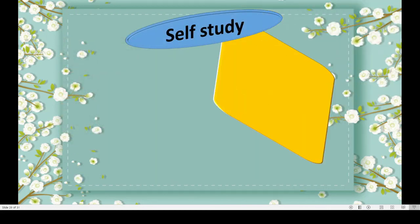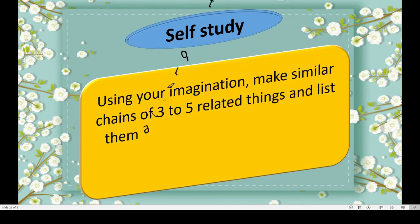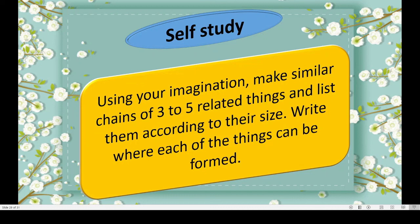Next is for self-study. Using your imagination, make similar chains of three to five related things and list them according to their size, where each of the things can be found. We have done so many examples and made chains properly. We arranged the things from smallest to biggest and from biggest to smallest. You take some words or objects, arrange them in a chain, and keep them in proper order — from smallest to biggest or biggest to smallest.